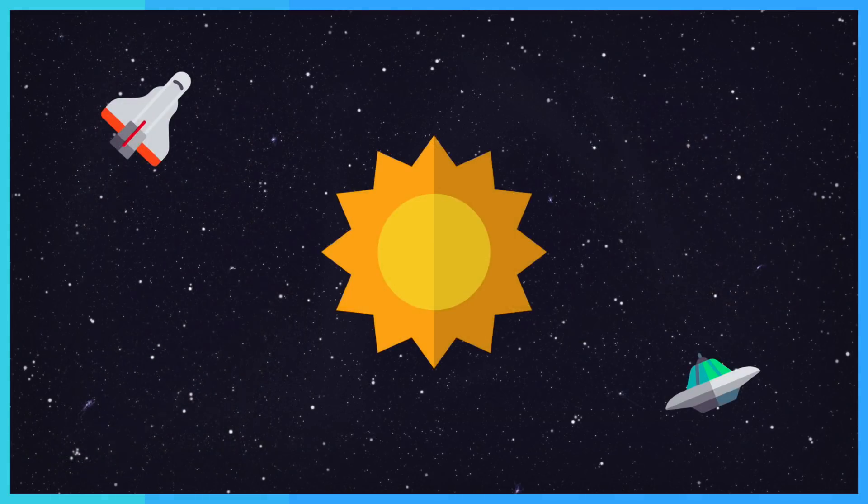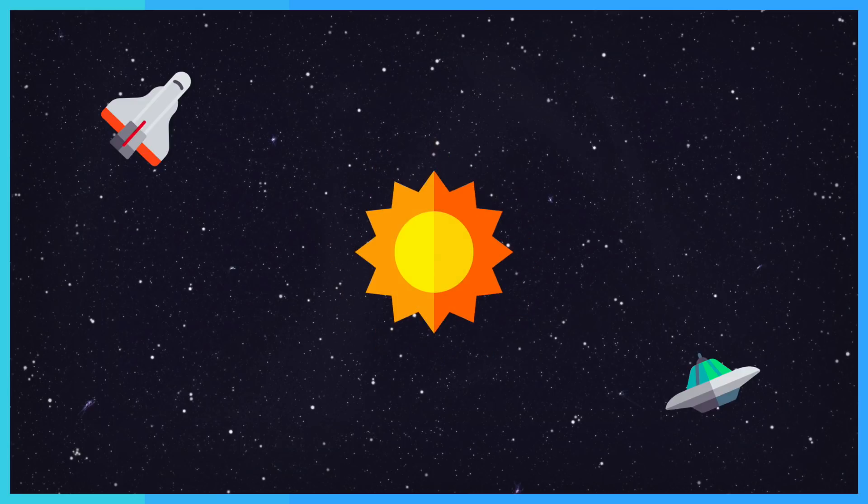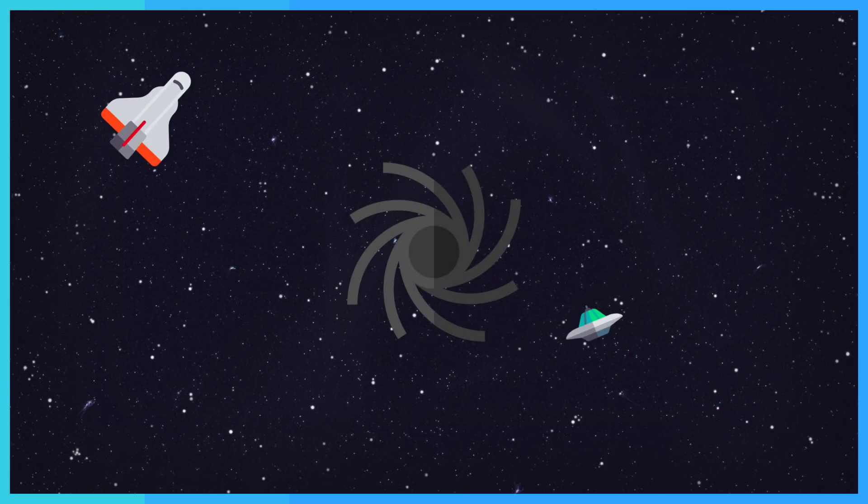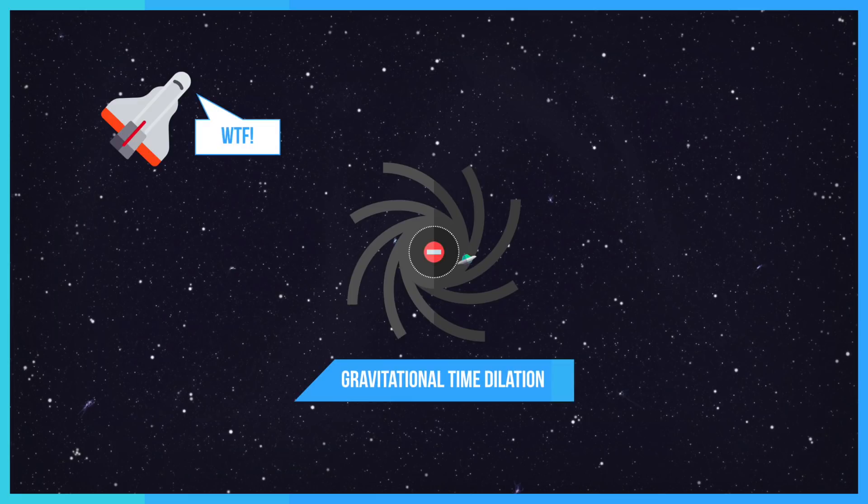These black holes could have seeded the supermassive black holes that are found in the centers of most galaxies. Whilst most of the energy released in the gravitational collapse of a black hole is emitted very quickly, an outside observer looking at this event does not actually see the end of this process. Even though the collapse takes a finite amount of time, a distant observer sees the in-falling material slow and halt just above the event horizon.